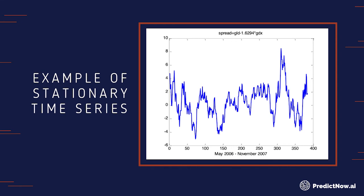You can see that it doesn't go up too much, and when it goes up it comes back down — it's mean-reverting. That is the kind of feature, the kind of time series, that we can use. If you are going to make a prediction, it's valid because the price now is very similar to when the data first started. This is called a stationary price series, and it's suitable for use as a feature.